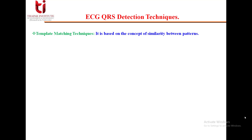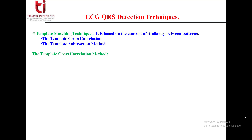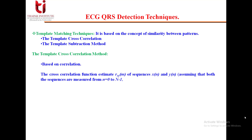The first technique is template matching. It is based on the concept of similarity between patterns. In this we have the template cross-correlation method and the template subtraction method. Both of these require a standard pattern, and the given pattern is then compared against it for observing similarity or dissimilarity. The template cross-correlation method is based on correlation. In the continuous correlation method of detecting the QRS complex, a template of this morphology is cross-correlated with the incoming signal.